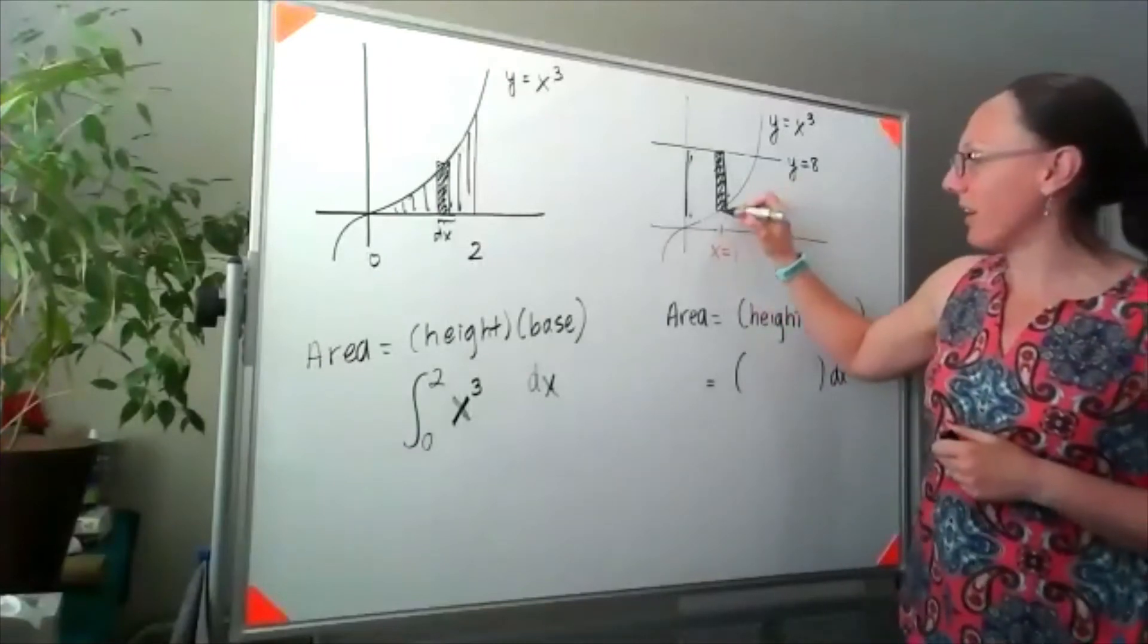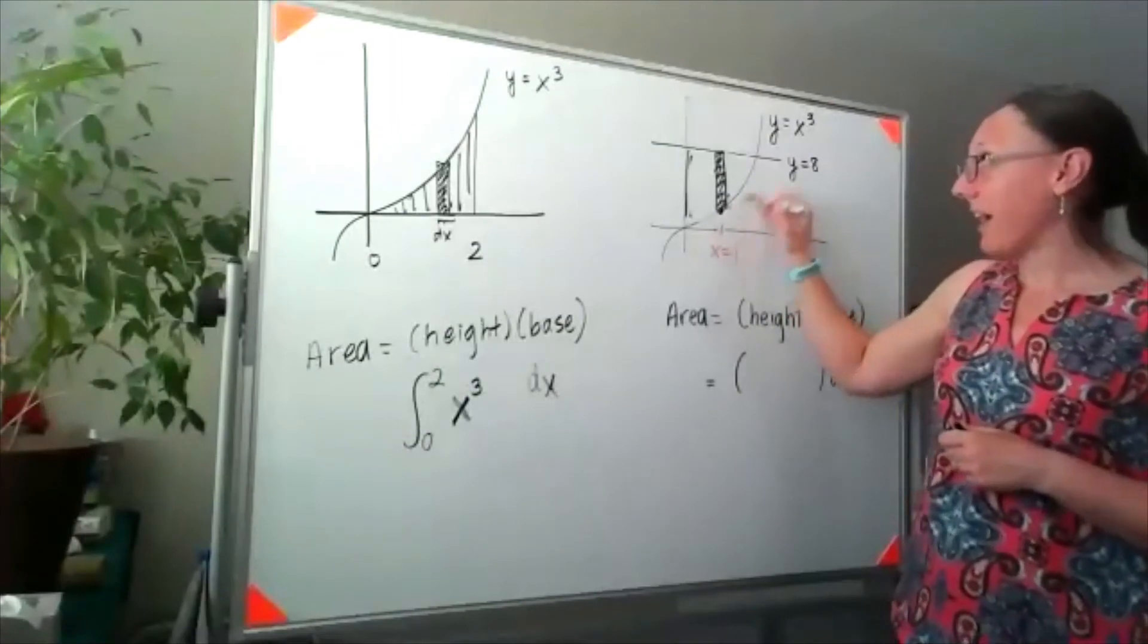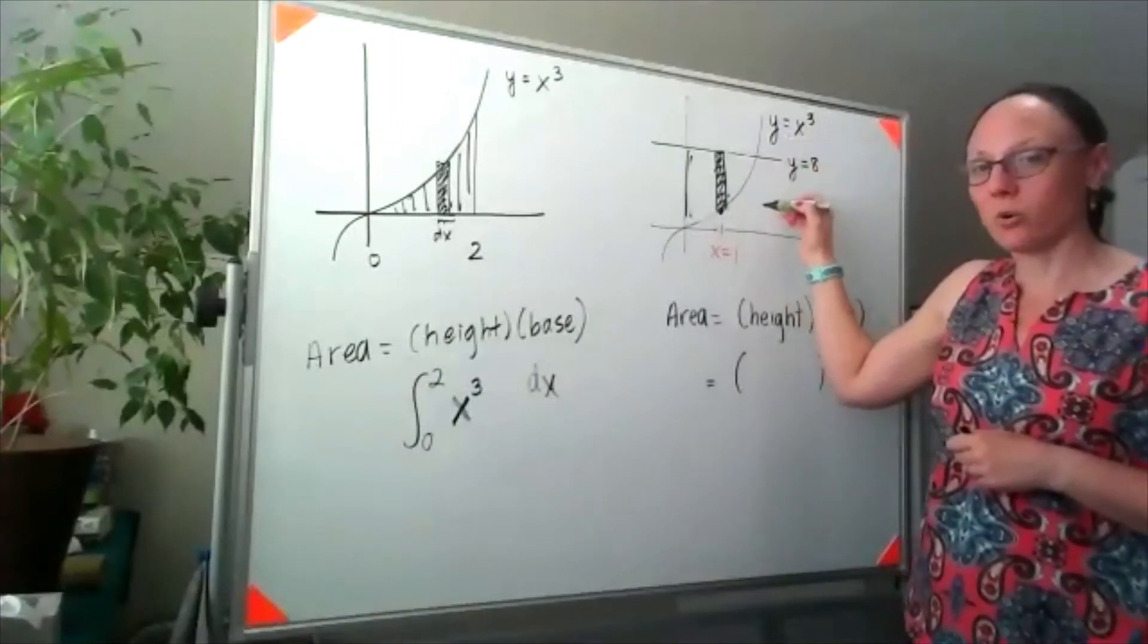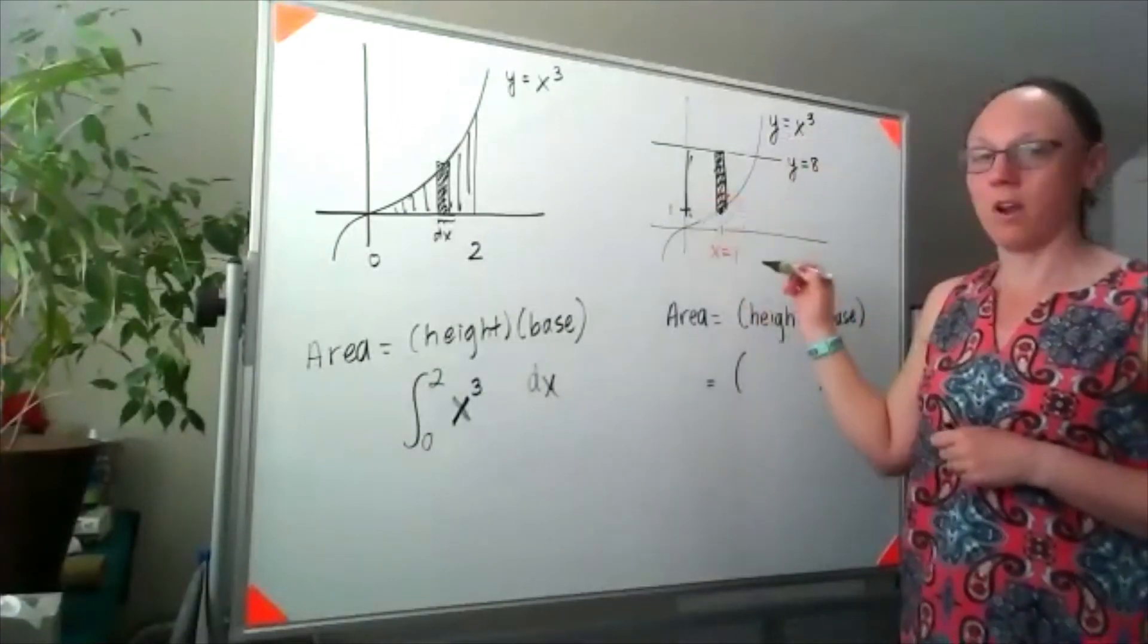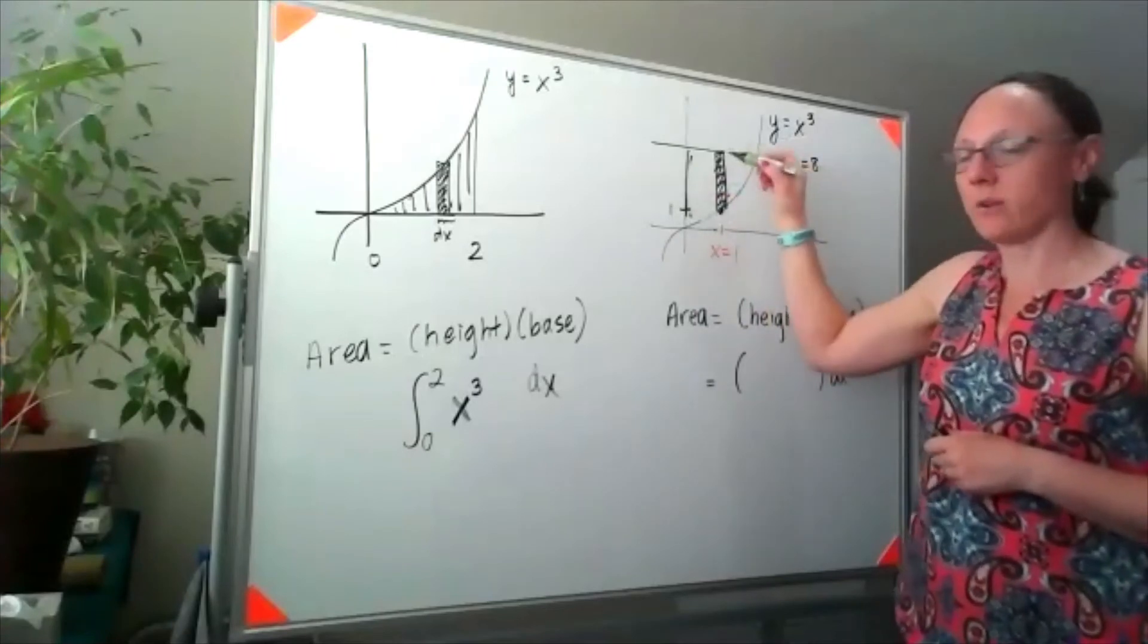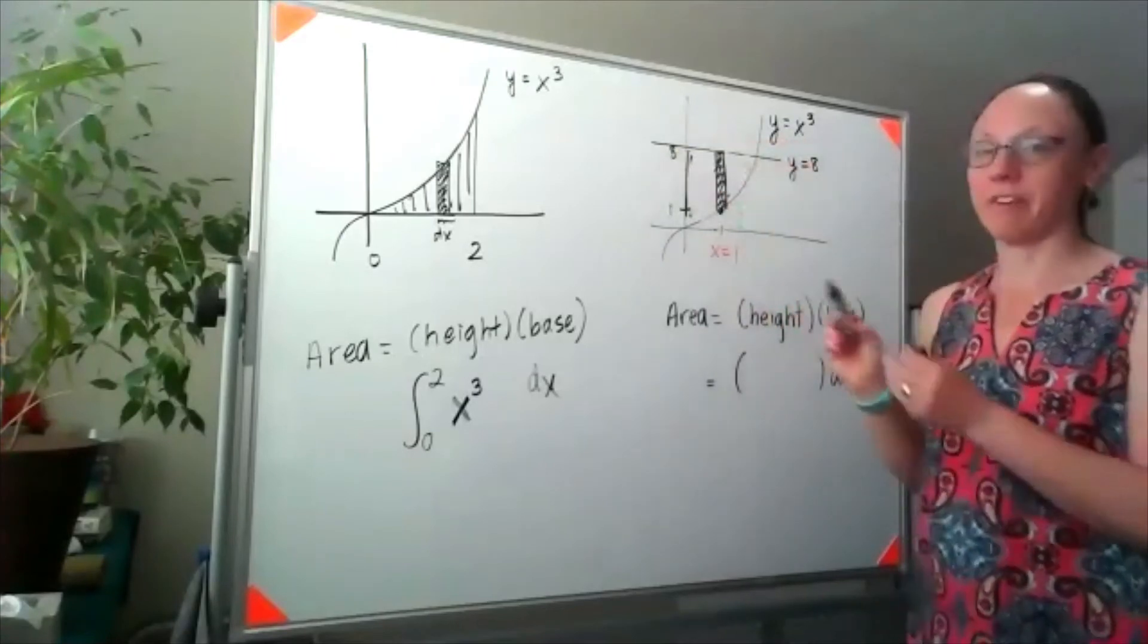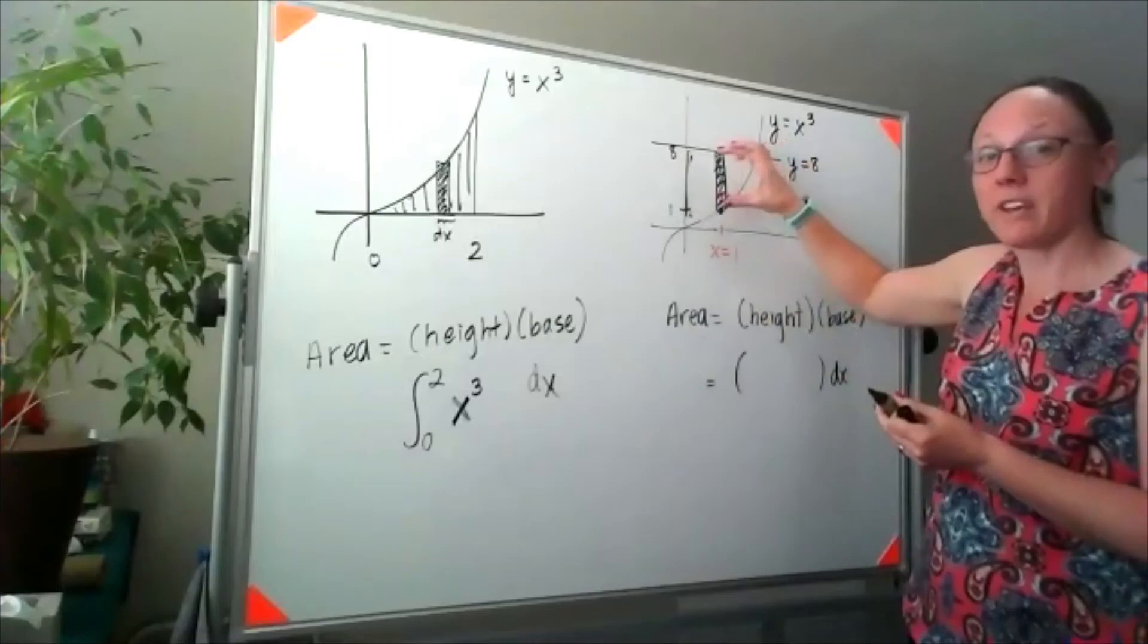If this was at an x value of 1, then the height for y equals x cubed would be at a height of 1, and we know that the height of y equals 8 is at a height of 8. So this particular rectangle would have a height of 8 minus 1, or 7.